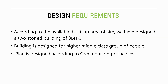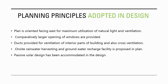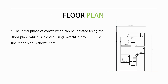According to the available built-up area of the site, a two-storied 3BHK building has been designed for a higher middle class group of people, following green building principles. The plan is oriented facing east for maximum utilization of natural light and ventilation, with comparatively larger window openings. Ducts are provided for ventilation of interior parts, cross ventilation is incorporated, on-site rainwater harvesting and groundwater recharge are proposed, and passive solar design has been accommodated. The floor plan is laid out using SketchUp Pro 2020.